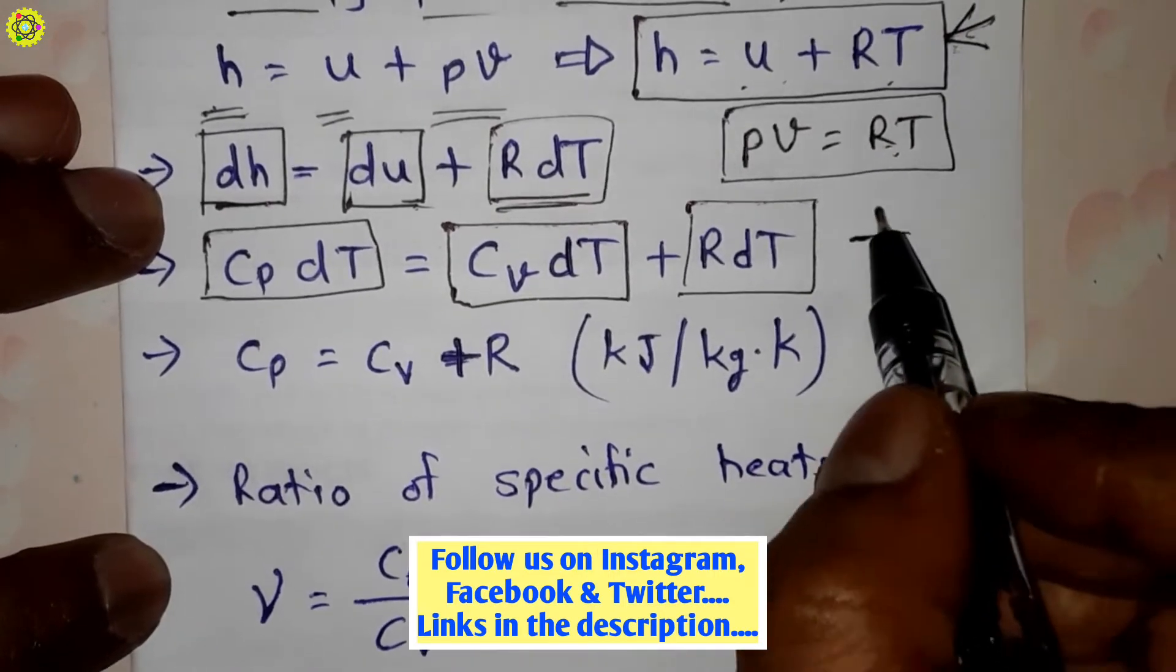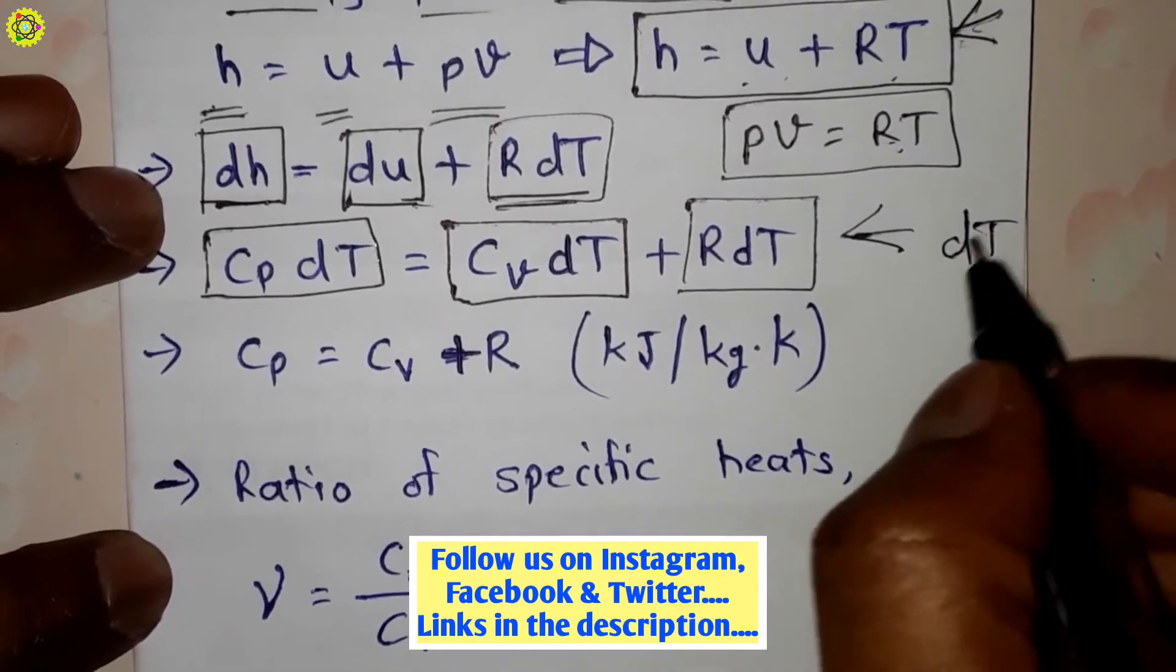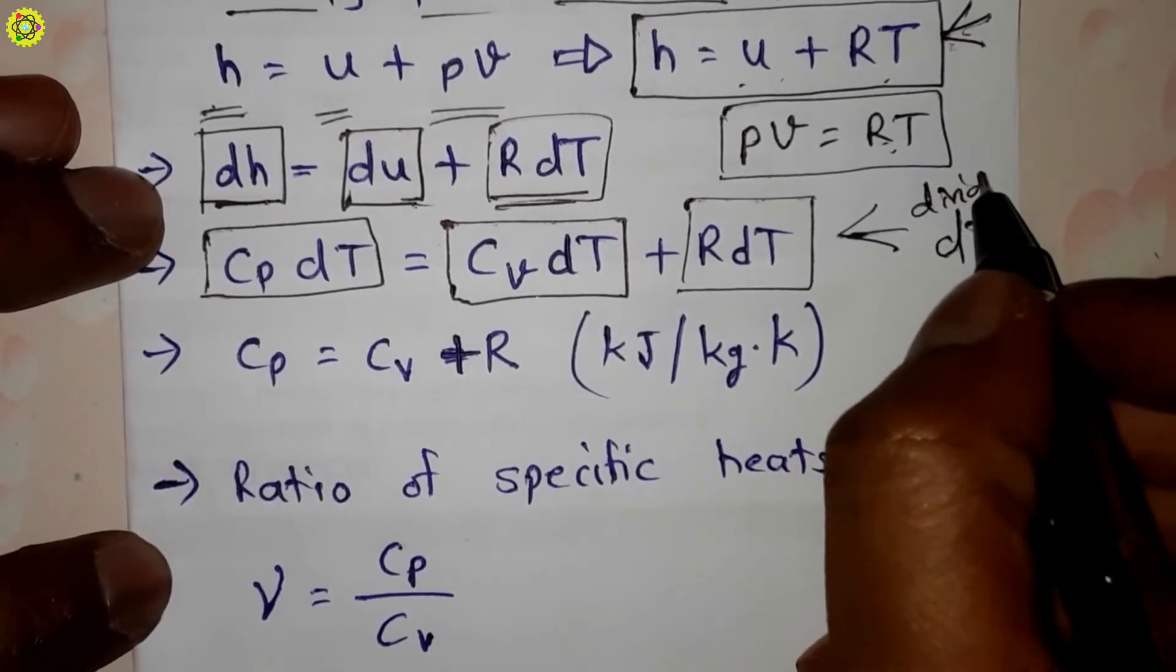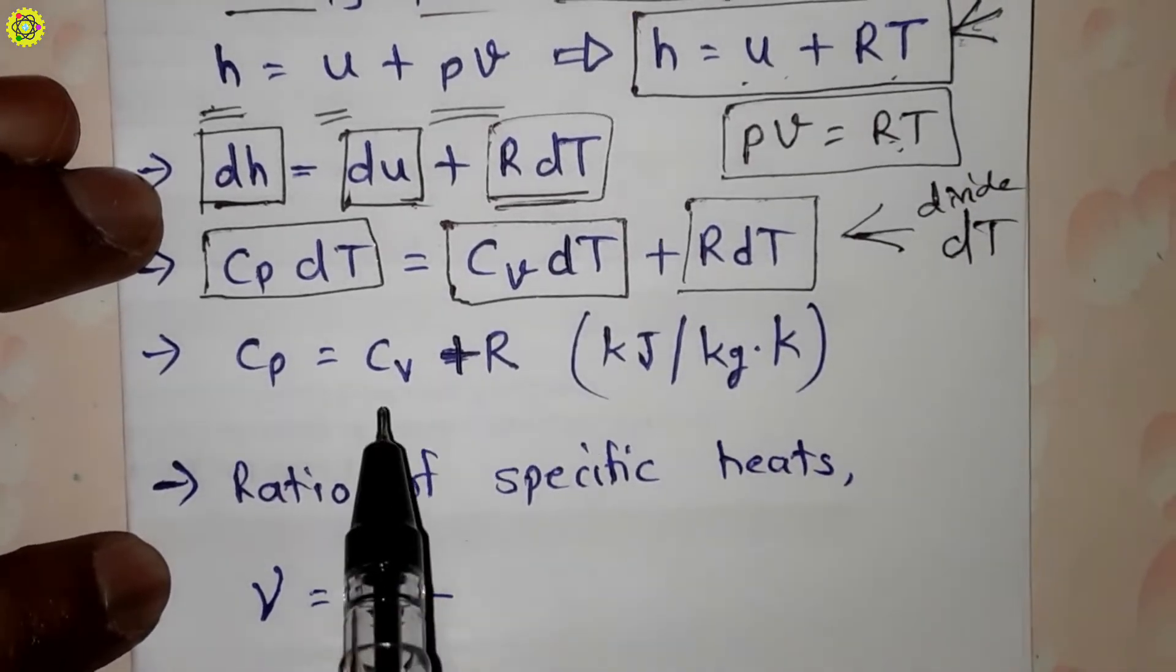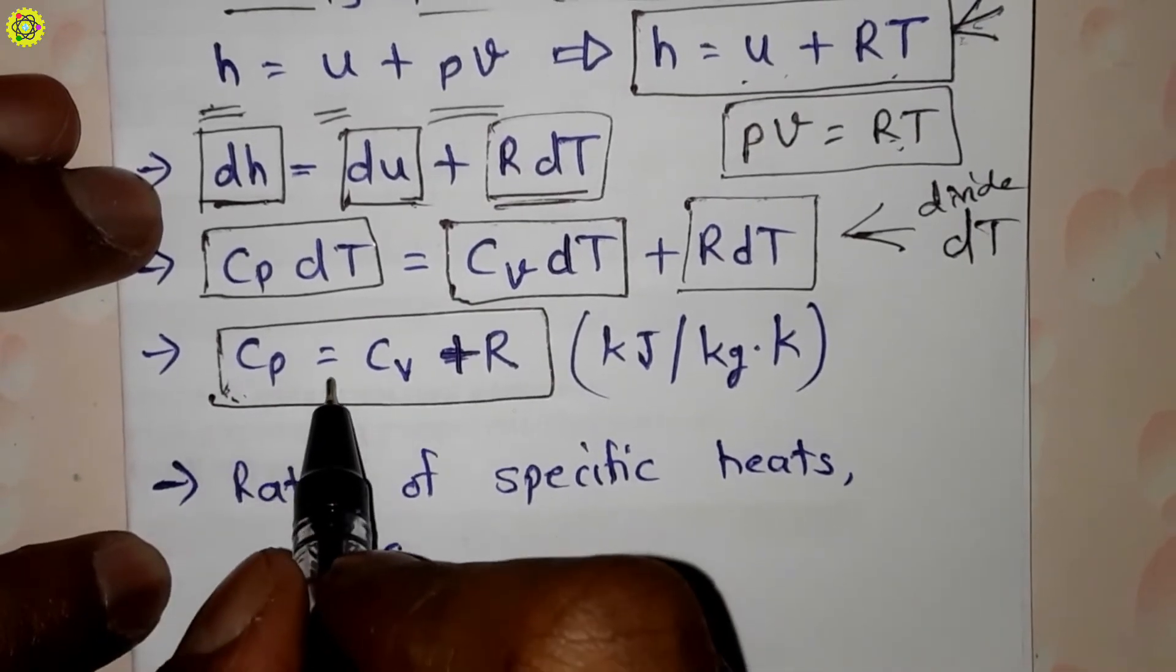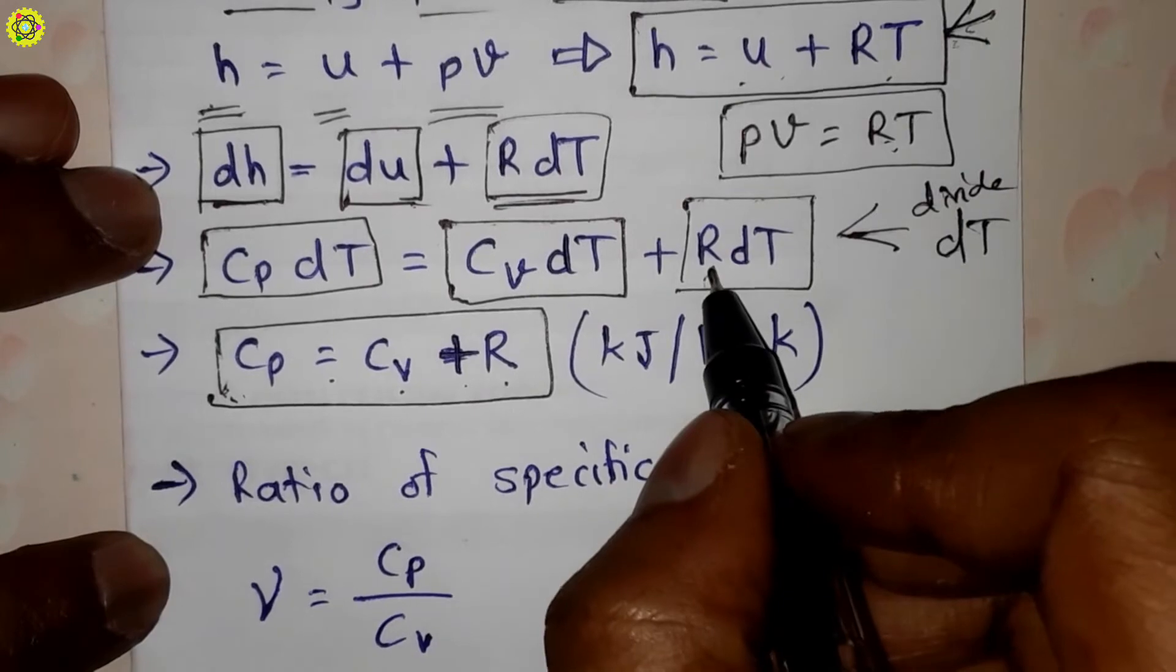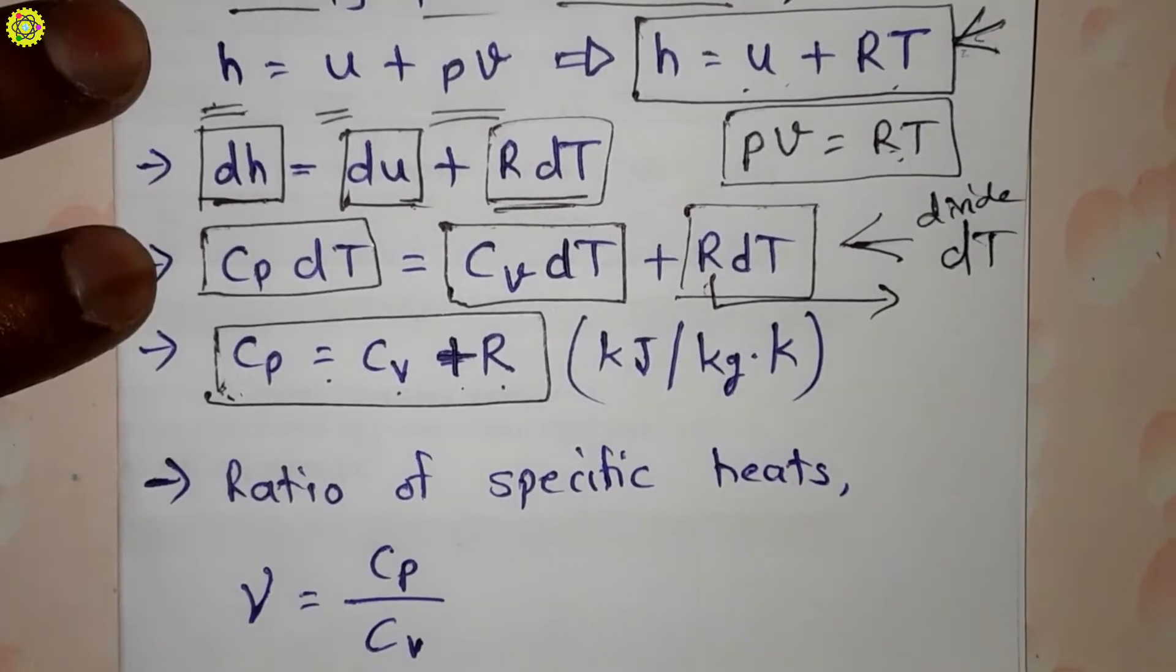Now we will divide this whole equation by dT. After that we will get this equation: Cp equals Cv plus R.